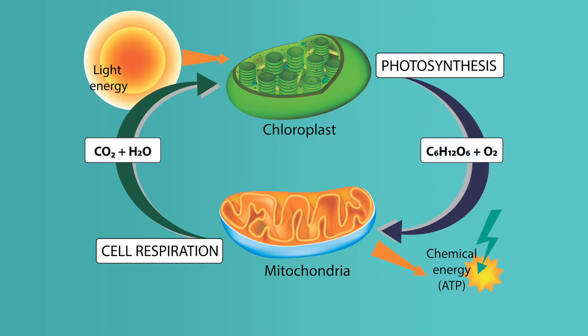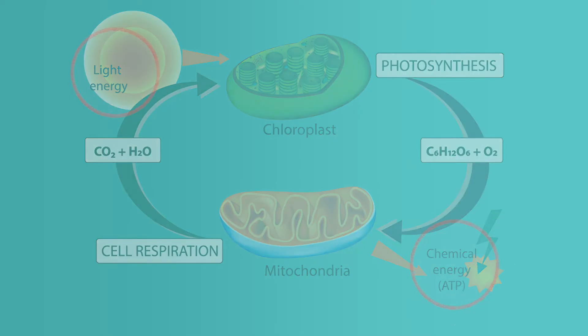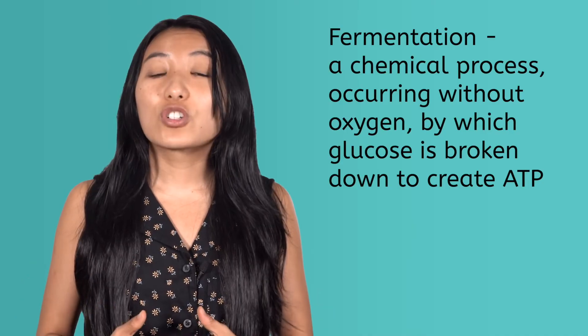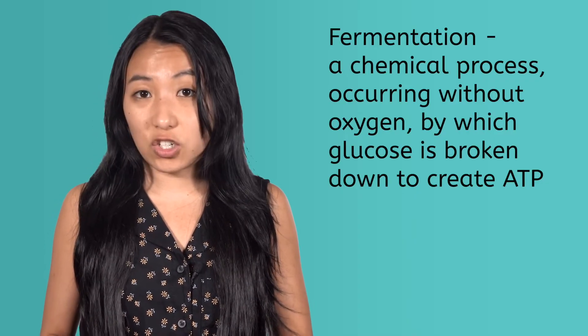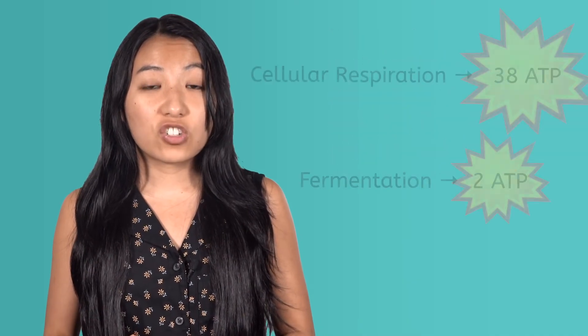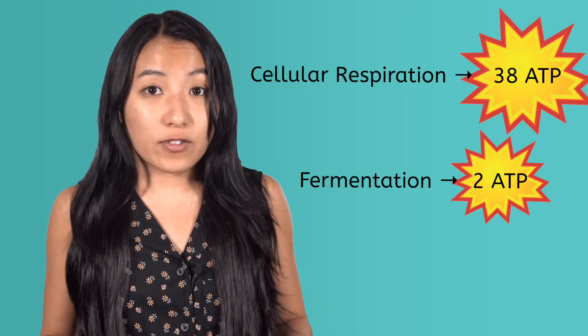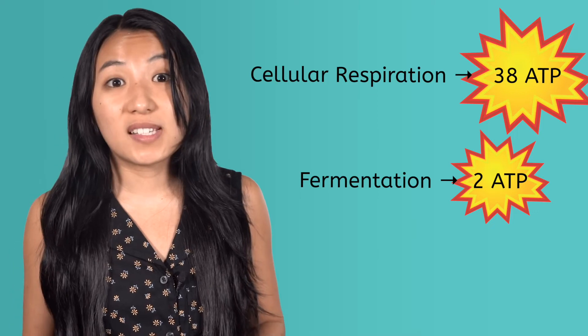In this way, photosynthesis and cellular respiration complement each other, recycling each other's waste to maintain a healthy balance of resources on Earth, while keeping energy flowing through living things. But what happens when oxygen isn't present? In this case, cells can still make energy through fermentation. Fermentation is a chemical process occurring without oxygen by which glucose is broken down to create ATP. However, one cycle of cellular respiration generates a whopping 38 ATP molecules, while fermentation only yields a measly 2 from the same amount of glucose.